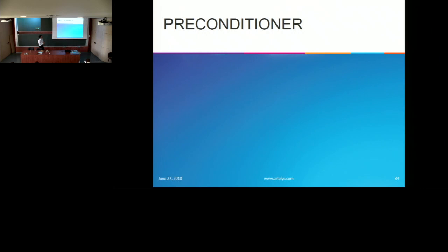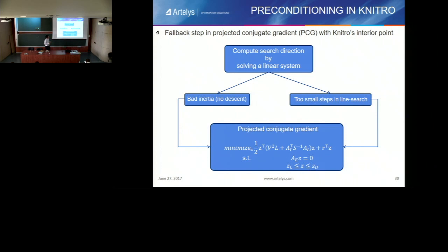Now, one of the latest features is the new preconditioner. For those familiar with Nitro, you may have noticed that sometimes in the output you have many conjugate gradient (CG) iterations. Nitro's algorithm reverts to conjugate gradient iterations when it encounters numerical problems, and these CG iterations cost a lot in terms of CPU. We want to always reduce this iterative linear algebra part because it's sometimes really a bottleneck. All of this comes from ill conditioning of this subproblem, so the idea is to use a preconditioner.